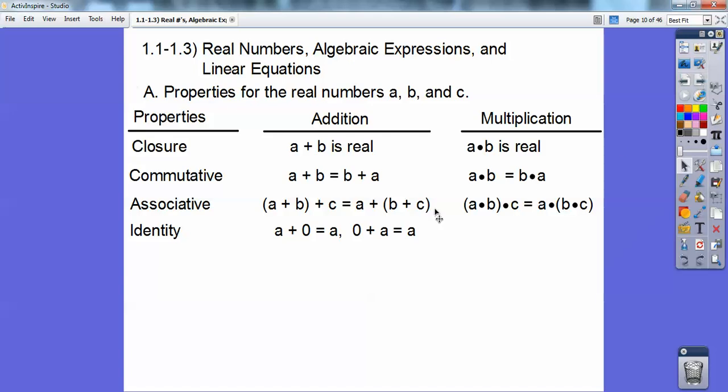The identity property is not used very much. Any number plus zero equals itself. And same for multiplication. When you multiply by one, any number times one also equals itself. It's not used a lot. I mean, it is, but you're not asked to identify it. Commutative and associative property, you'll see that probably on a test coming up.